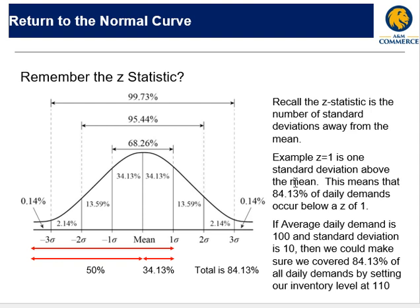If you have a z of one, that means you're one standard deviation above the mean. That means if you reordered based on one standard deviation above the mean, you would have enough inventory to cover 84.13%. 50% of it is because half falls on this side, and then this additional percentage here takes us up to one standard deviation.